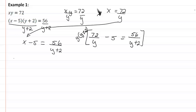And so what we're going to get is 72y minus 5 times y, y plus 2 equals 56y.